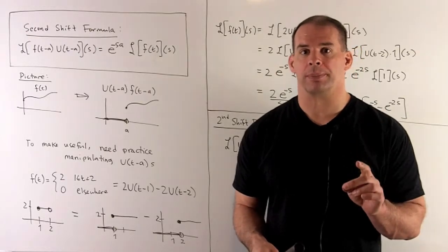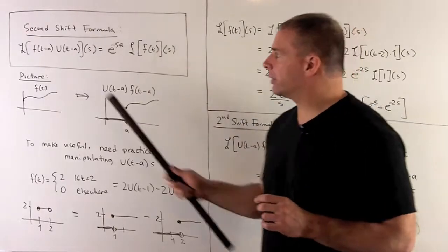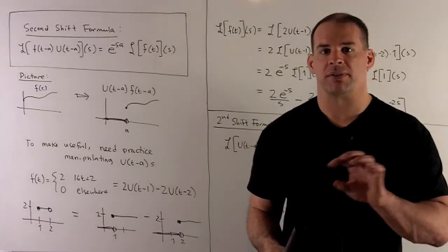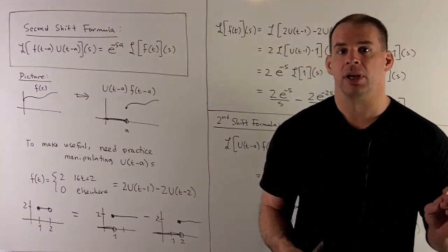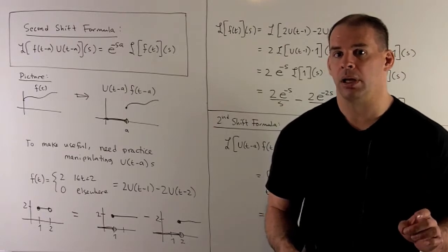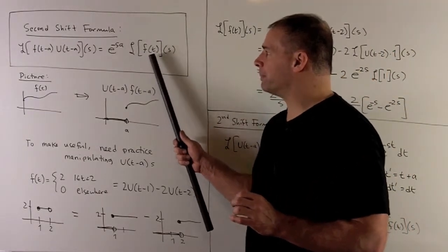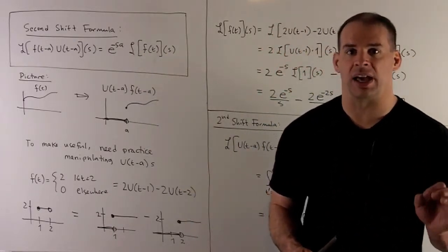Now, second shift formula. So here we start with our f of t multiplied by ut, and then we shift everything to the right by a. We apply the Laplace transform. What comes out is going to be the Laplace transform of our original function times e to the minus sa.